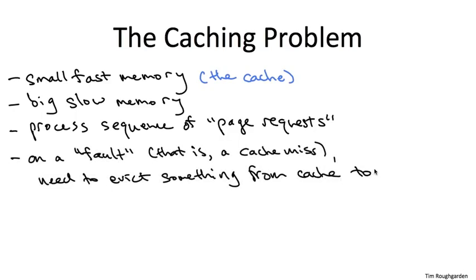The algorithmic aspect of the problem enters the picture when there's a cache miss, or also known as a page fault. That is when there's a request for some data which is not already in the cache. When that's the case, you have to bring it into the cache. And the design question then is, what do you evict from the cache in order to make room for this new piece of data which you have to bring in?